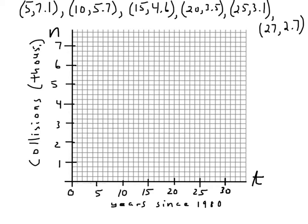Now, it's time to plot the points. So, for the first point, it's 5 years after 1980 and 7.1. We'll plot the point right around there. And then, for the second one, 10 years after 1980 and 5.7. You've got to estimate a little. And then, the next one, 15 and 4.6.